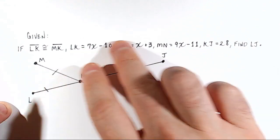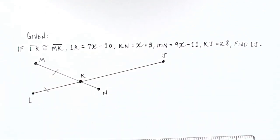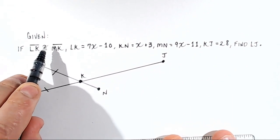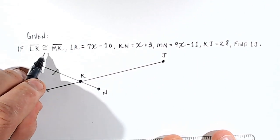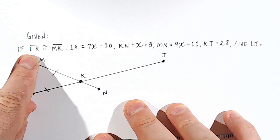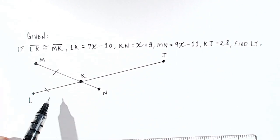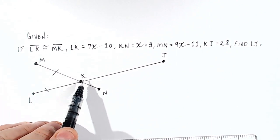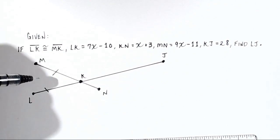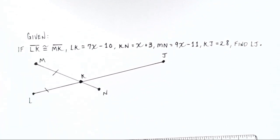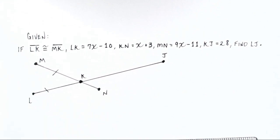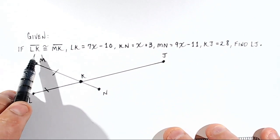Let's break this down and label our picture so it makes more sense. First, let's talk about terminology. This symbol — an equal sign with a squiggly line over it — means congruent, meaning they're the same. Looking at the picture, LK and MK each have a little hash mark on them, which means those lines are equal or congruent to one another.